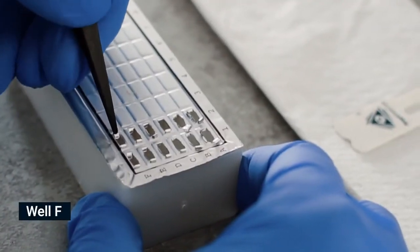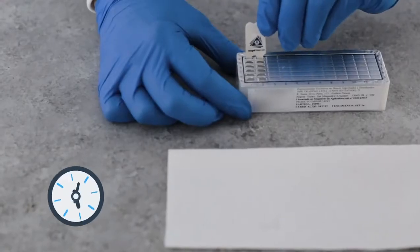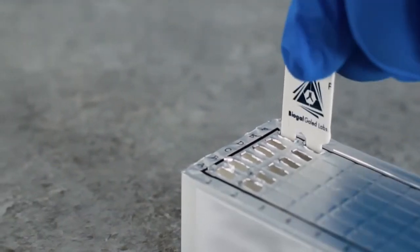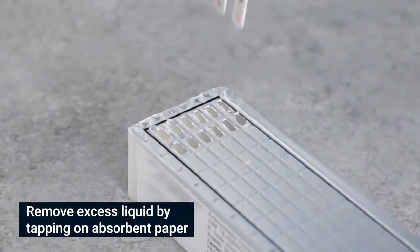Pierce the foil of the next wells in row F. Shake off excess liquid and insert comb for 10 minutes. Move the teeth at least twice during each step. Remove excess liquid.